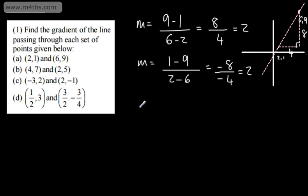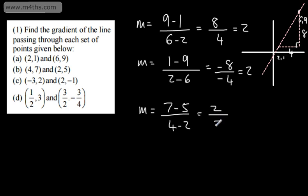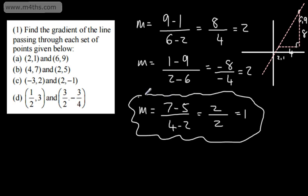For part (b), using points (2,5) and (4,7): the gradient is 7 minus 5 over 4 minus 2, which is 2 over 2, giving a gradient of 1. You could have swapped that round — 5 minus 7 over 2 minus 4 — and dealt with the negatives. If you want to draw a quick sketch when you're doing this to begin with, you can.